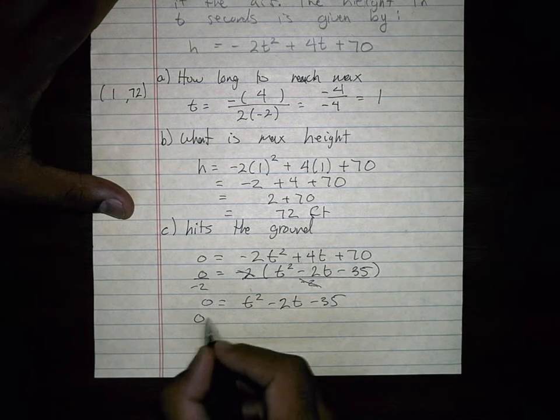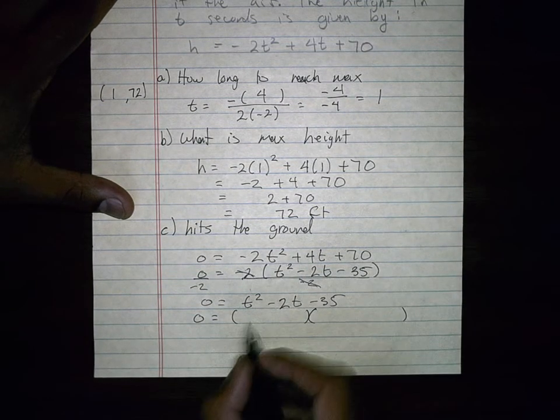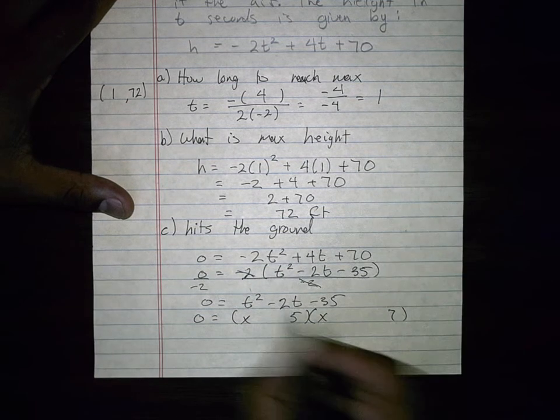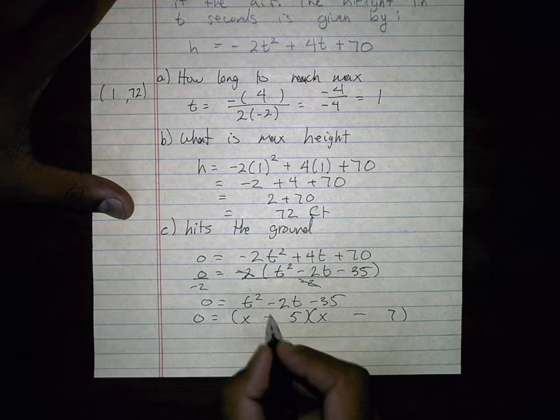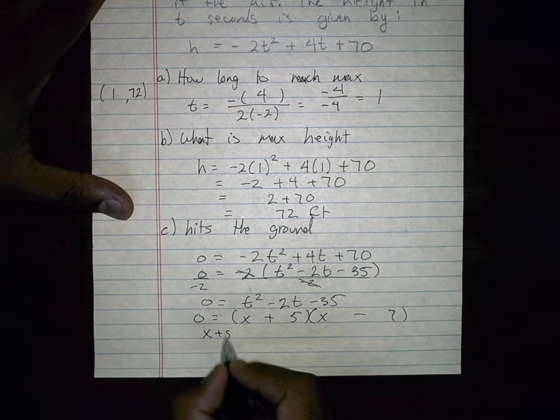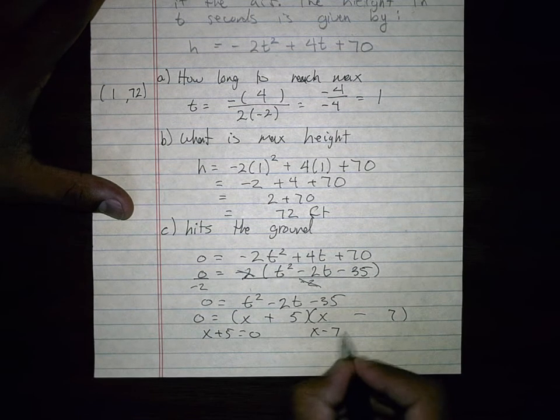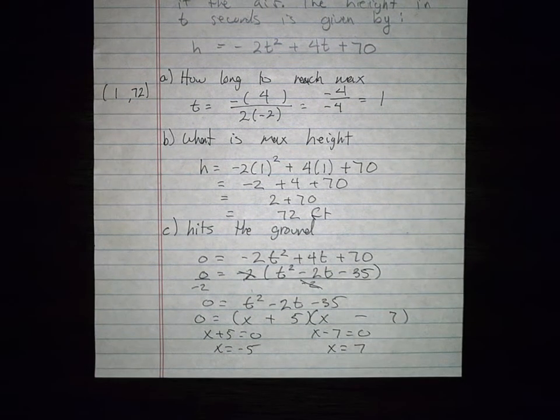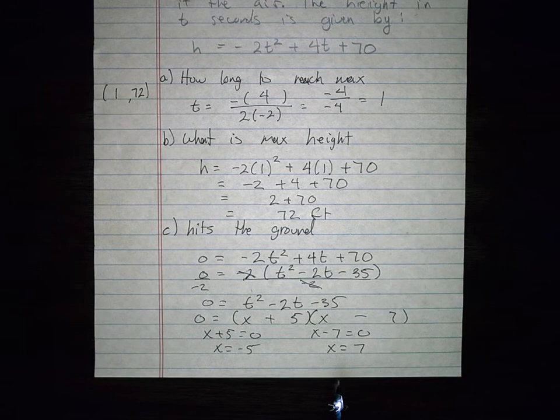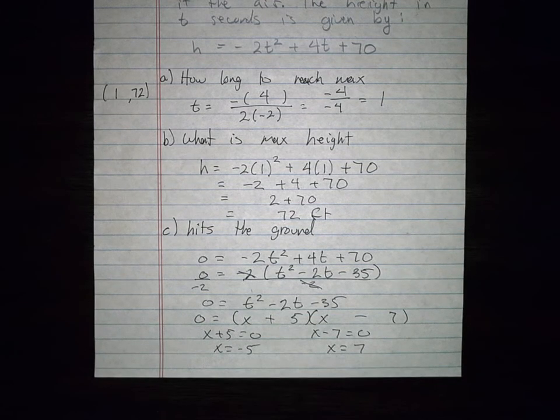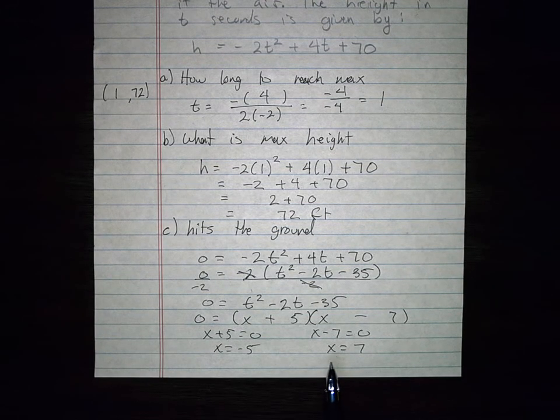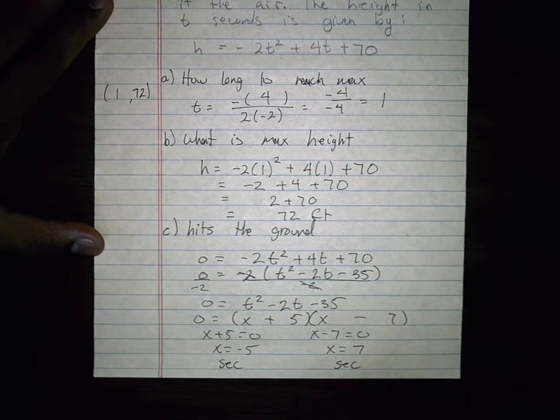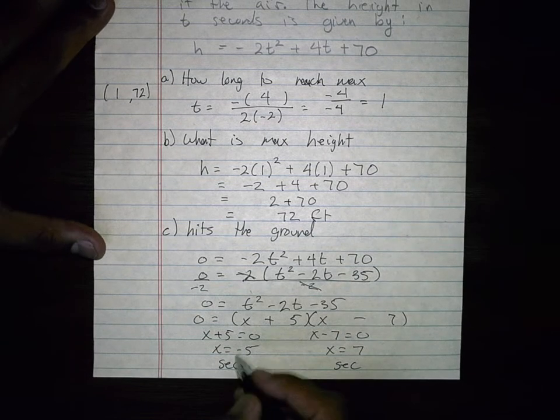So I asked myself, what multiplies to 35 and adds to negative 2? So that's going to be 7 and 5. We got to get to a negative 2, so the 7 is negative. I set those equal to 0, and x equals negative 5, and x equals positive 7. So what I just figured out was these were - I switched out of habit, sorry, from t's to x's, but we're trying to figure out time here. So this is negative 5 seconds, and this is positive 7 seconds. And so what we're going to have to say is obviously that does not work. Right? You can't have negative time.